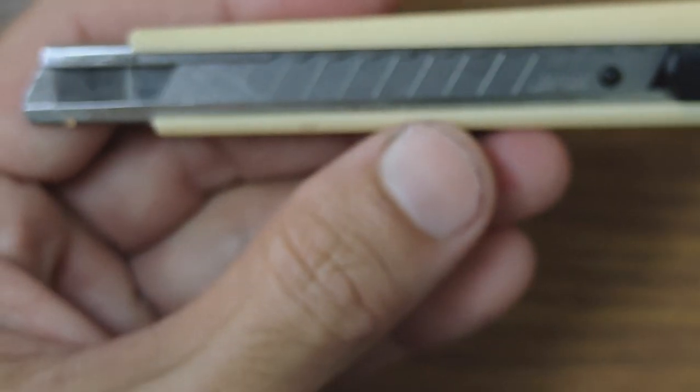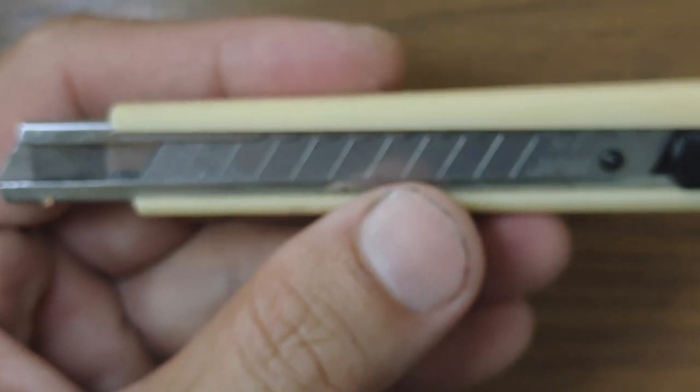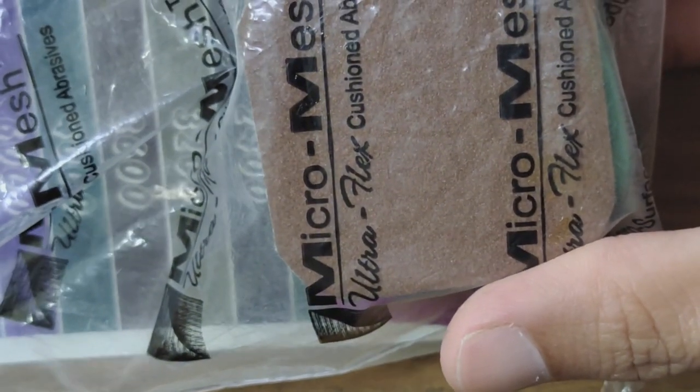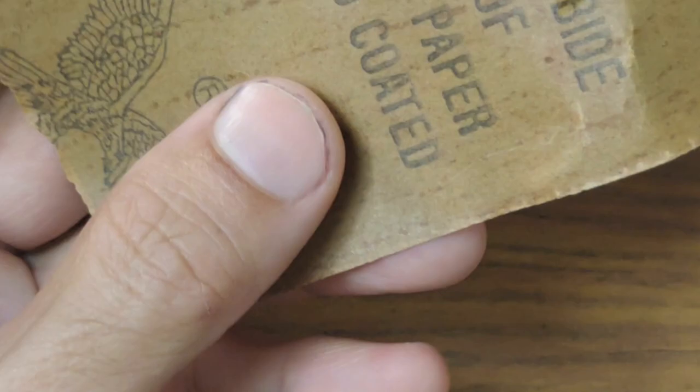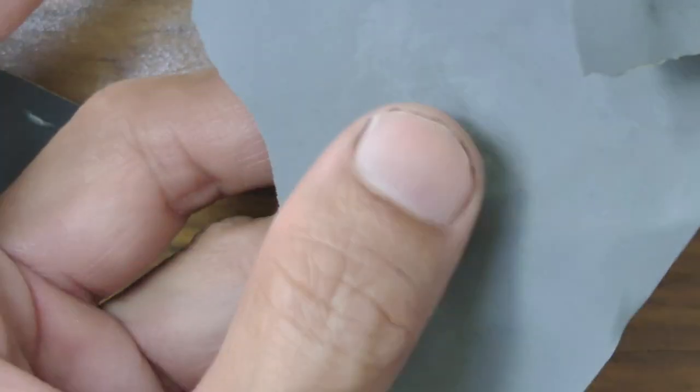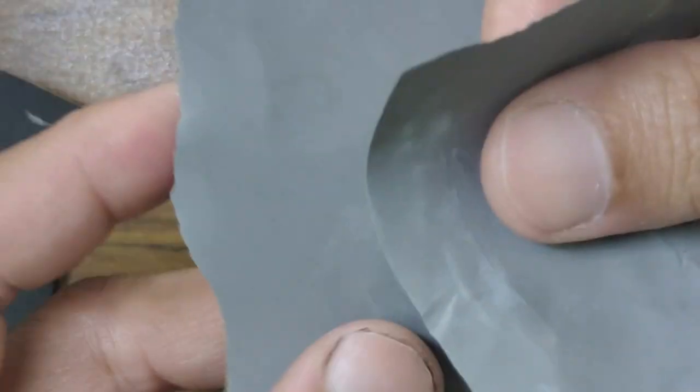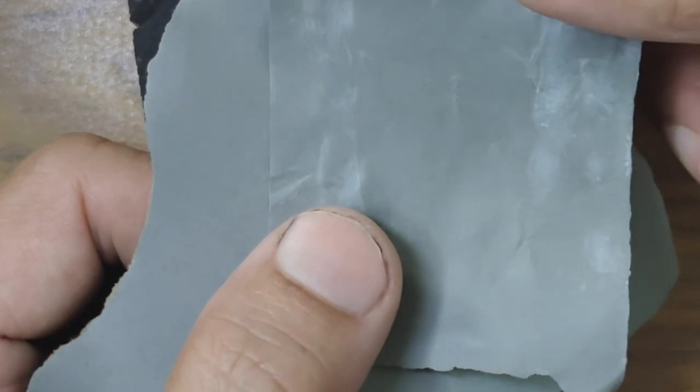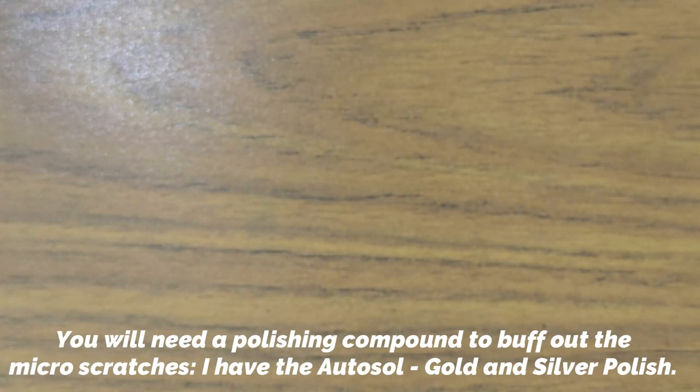So the tools I'll be using will be a pen knife, I'll be using my favorite trusty micromesh with different grits, I have some sandpaper - this is I believe 600 grit or 700 grit - and then I have a 1000 grit sandpaper here, and of course I have water on standby.